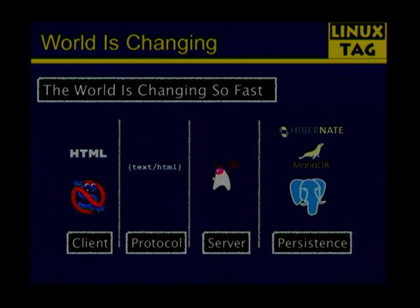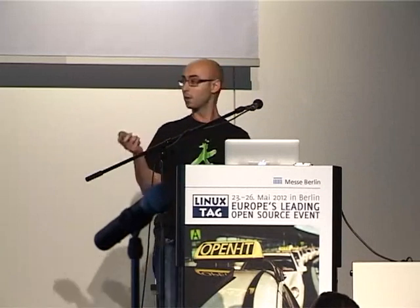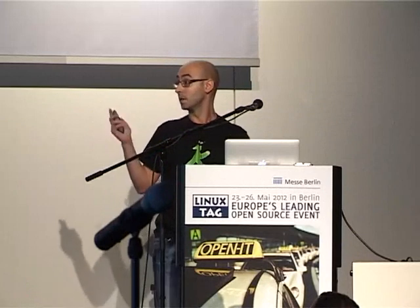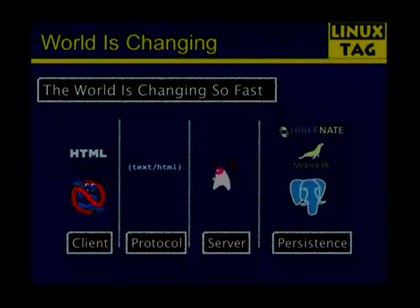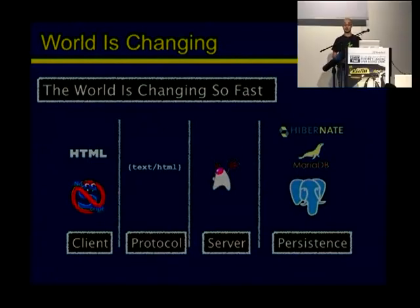The world is changing so fast, so does technology. If we look back ten years ago, we will see that Java Enterprise Editions have suffered many changes. For example, ten years ago our client side was developed using HTML, and we tried to avoid using JavaScript. We sent to the browser only HTML code. Our server side was implemented by Java, using the typical pattern servlet plus JSP, maybe using EJBs, and the persistent layer was implemented using the relational database management system.